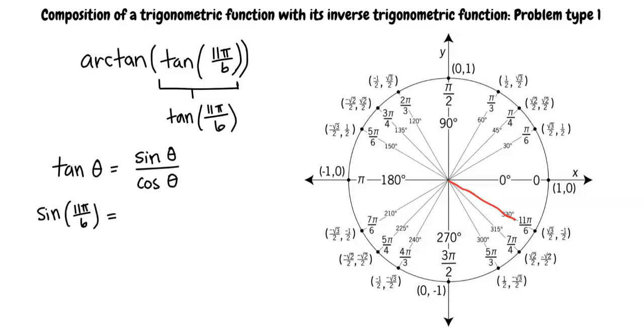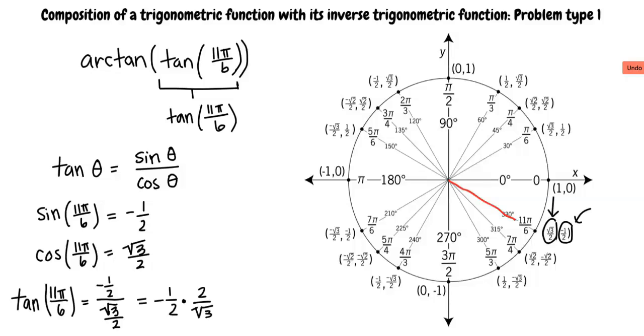Recall that tangent equals sine over cosine. Sine 11 pi over 6 is equal to negative 1 half. Cosine of 11 pi over 6 is equal to square root of 3 over 2. So negative 1 half divided by square root of 3 over 2 is equal to negative 1 half times 2 over square root of 3. This simplifies to negative 1 over square root 3. To rationalize the denominator, we multiply by square root of 3 over square root of 3 and write negative square root of 3 over 3. Therefore, tangent of 11 pi over 6 is equal to negative square root of 3 over 3.